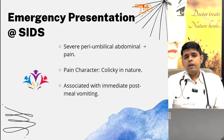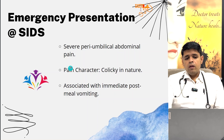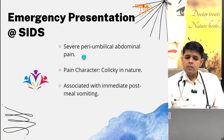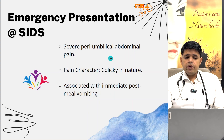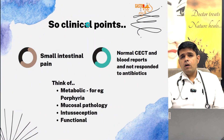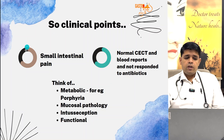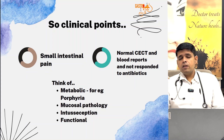He came to me on day 10 of the pain. The pain was very severe — the child was tossing on the bed. The nature of the pain was colicky. Location was peri-umbilical and it was associated with immediate post-meal vomiting. From this history, the location of pain tells us the pathology is in the small intestine. However, the CT scan was not showing anything.